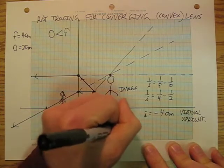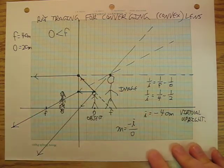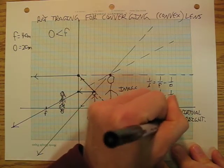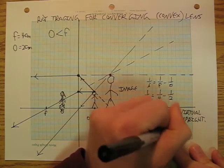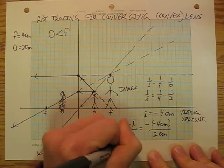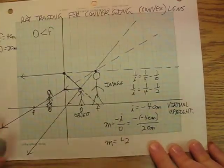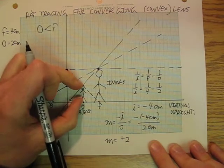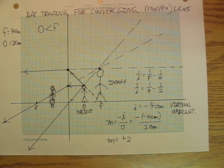And then I'm going to say magnification is negative I over O. So it is negative negative 4 divided by 2 centimeters. So my magnification is going to be positive 2. My little man here was 2 boxes high. The image of them is 4 boxes high.